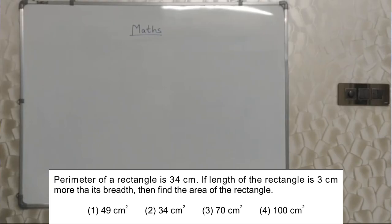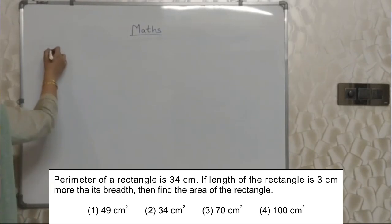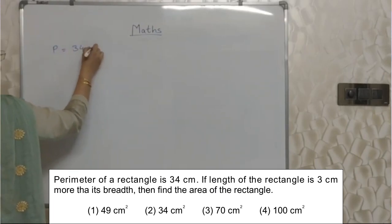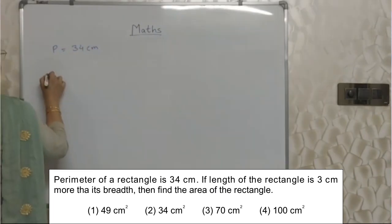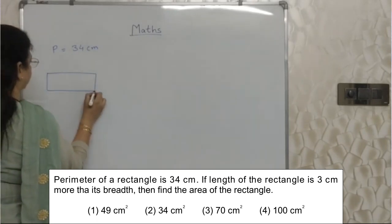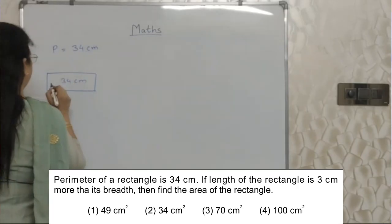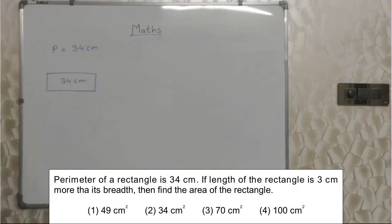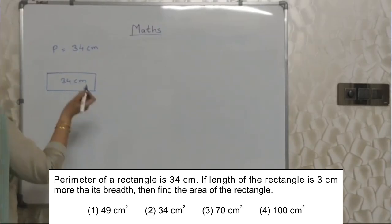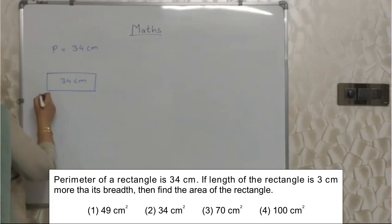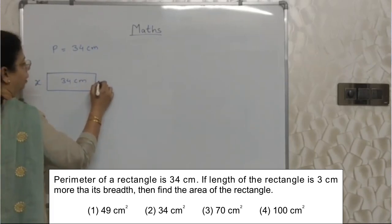Perimeter of a rectangle is 34 cm. If the length of the rectangle is 3 cm more than its breadth, then find the area of the rectangle. Okay, perimeter they have given as 34 cm. This is a rectangle — let's draw it. We don't know the length, we don't know the breadth. They are saying length is 3 cm more than breadth. But if we don't know the breadth, how will we find out the length? So first, assume breadth as x.